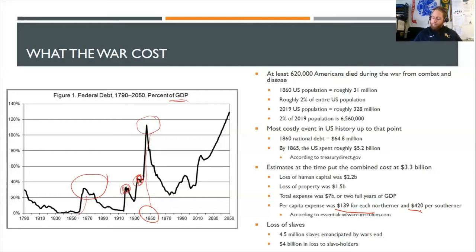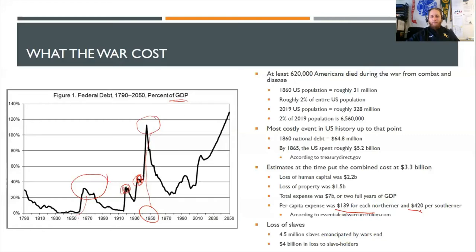We also need to mention the financial value of enslaved people as part of the South's losses — uncomfortable as it is. One of the arguments Southerners used to defend slavery was that they had invested millions and billions of dollars into the institution, and to lose that without compensation would be catastrophic for the Southern economy. By war's end, approximately 4.5 million slaves were emancipated, representing a total loss of about $4 billion to slave owners across the country with the passage of the 13th Amendment.